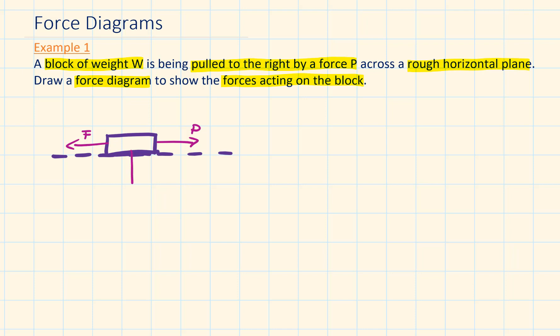Now let's deal with the vertical forces. The force acting downwards is the weight of the block. We can show this by an arrow pointing downwards and label it with a W.